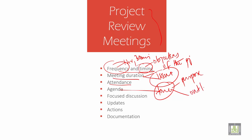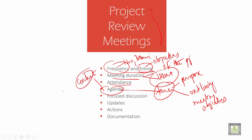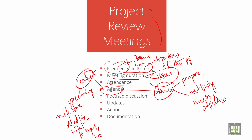The agenda outlines meeting objectives such as the status update of the project, discussing milestones, deadlines, what everyone expects, and how best to prepare for the meeting. It covers all the contents of the meeting including upcoming milestones, deadlines, what to expect, and how best to prepare.